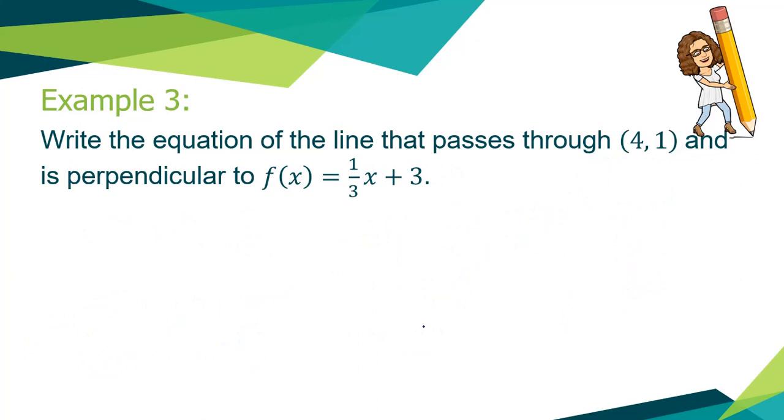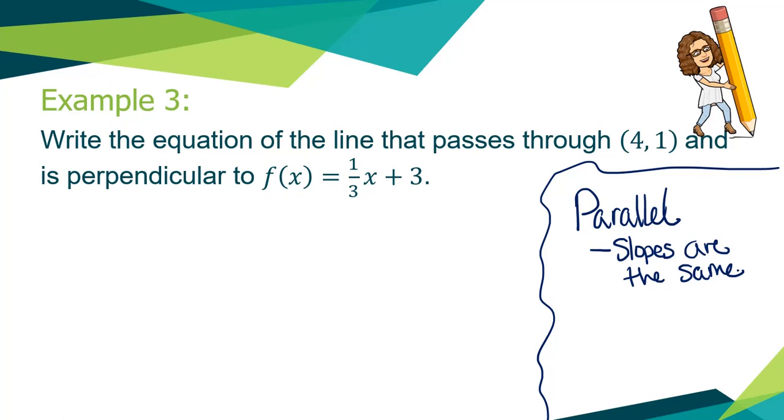Let's try another one. I need to write the equation of a line that passes through the point four, one, and it's perpendicular to f(x) equals one third x plus three. Now, sidebar conversation. We need to talk about perpendicular. You talked about this last year in geometry. You also talked about this in algebra one. What does it mean for slopes to be perpendicular? And what does it mean for slopes to be parallel? So let's talk about parallel first. Parallel lines are special in the regards of they'll never intersect, right? Well, if they never intersect, the slopes are the same. If the two lines never intersect, I have to have slopes that are exactly the same on my lines.